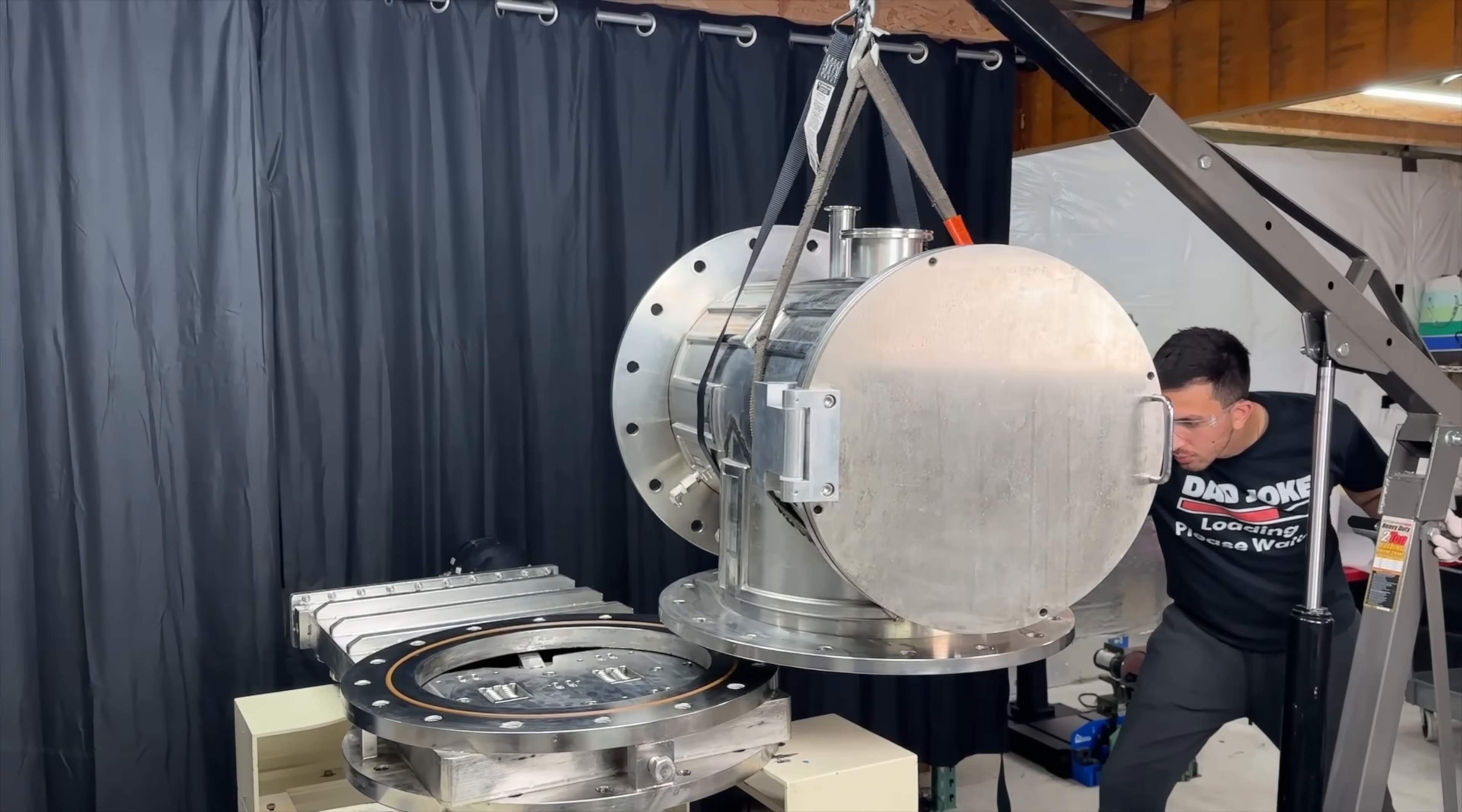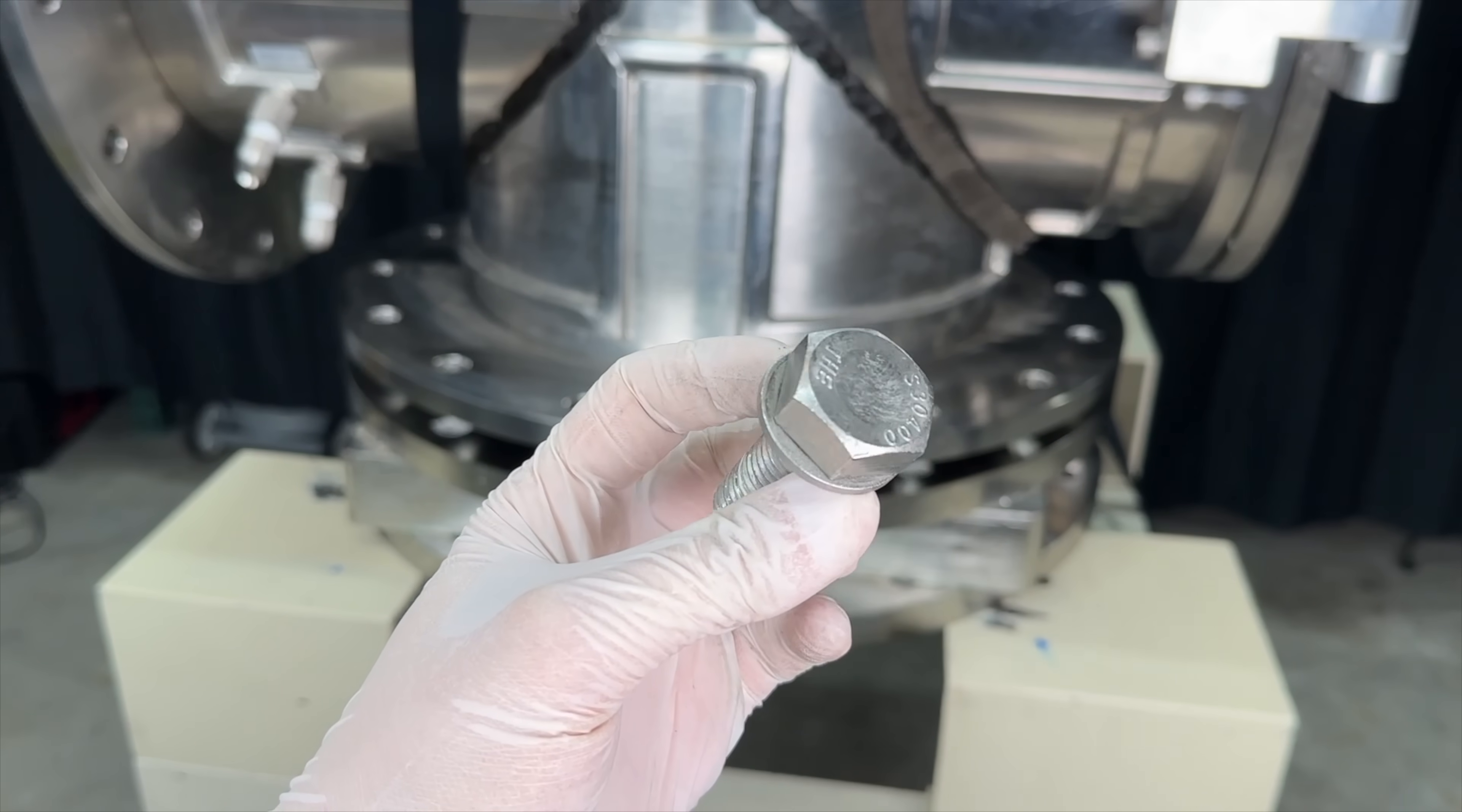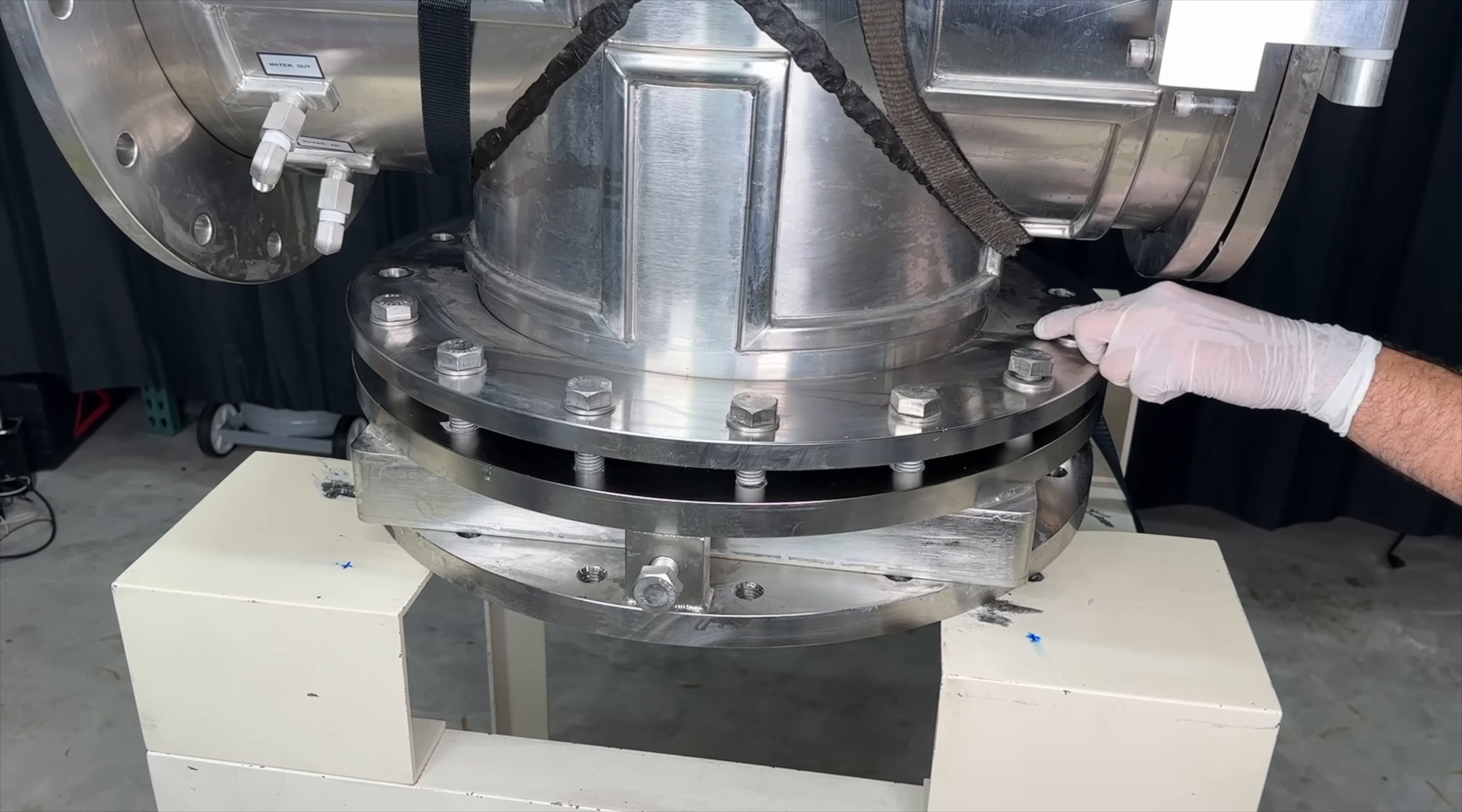Now for the fun part. We bring the main chamber over, hover it on top, and use these bolts I got from McMaster to align the two parts, and then we can drop the chamber down.